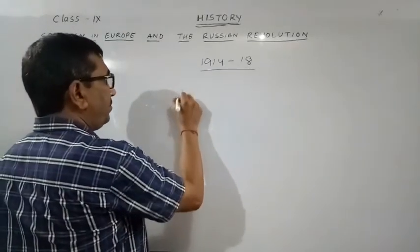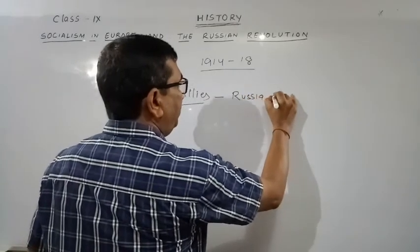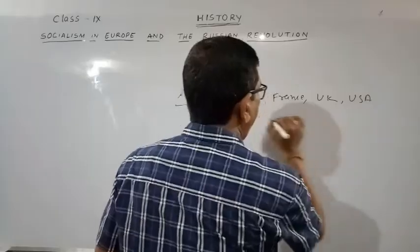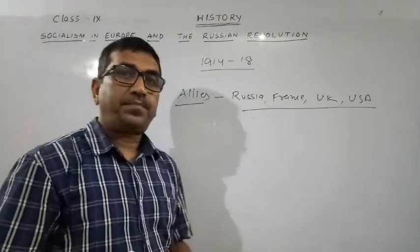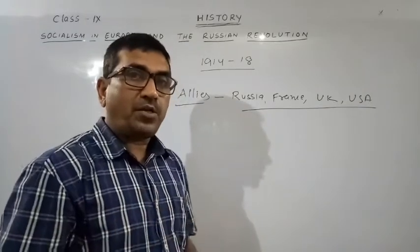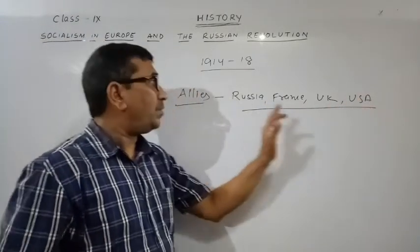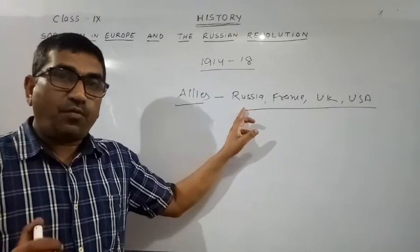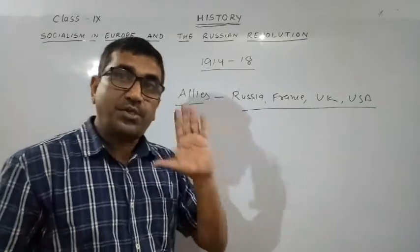The other group was the Allied Powers, consisting of Russia, France, UK, and USA. Japan and Italy were also part of the Allies. Russia had to withdraw from the First World War in 1917 after the October Revolution, but we must still discuss Russia's role in the war.